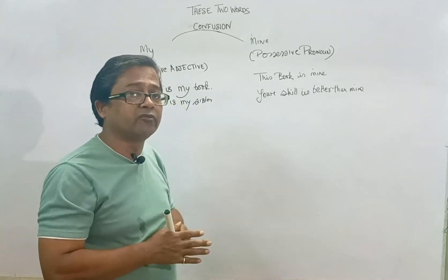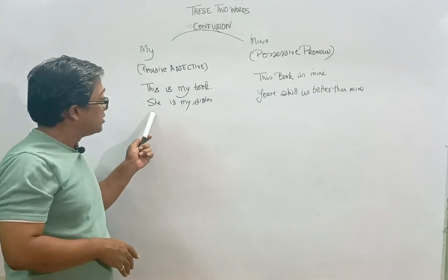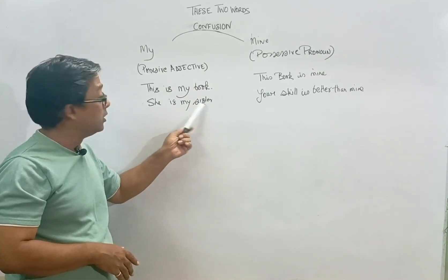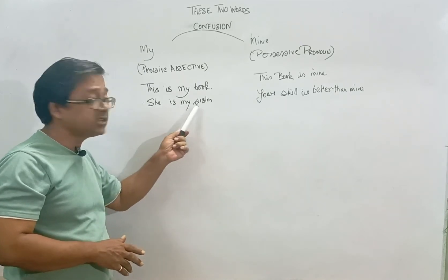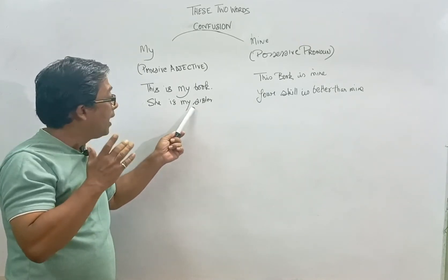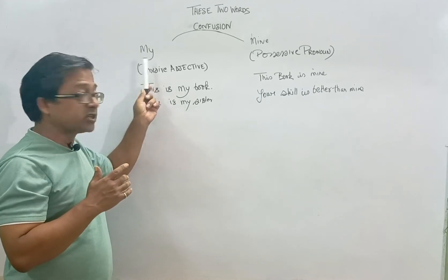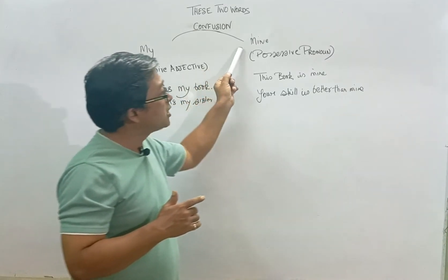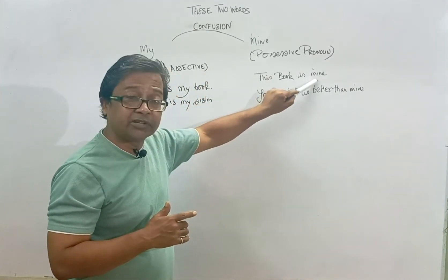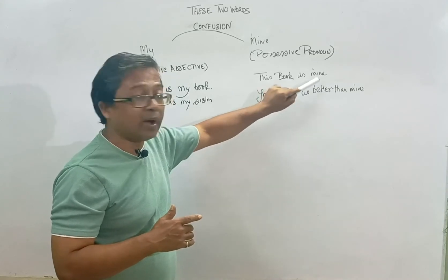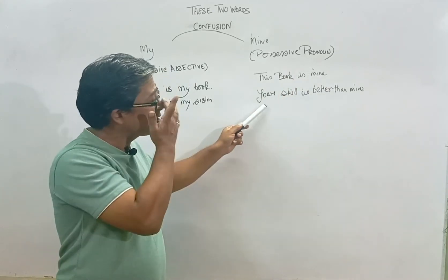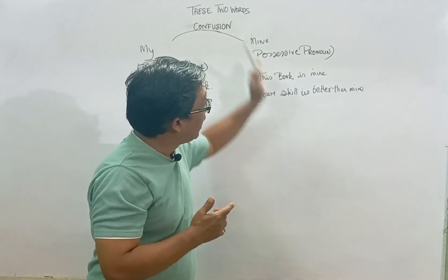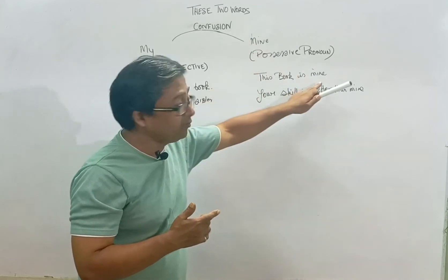Next sentence: 'She is my sister.' We are using my before a noun — whose sister? My sister. It is telling something about a noun. My is used as a possessive adjective and placed before a noun. Mine is used as a possessive pronoun and is used at the end of the sentence: 'This book is mine.' Next sentence: 'Your skill is better than mine.' Here we see mine as a possessive pronoun used at the end of the sentence.